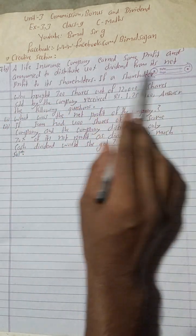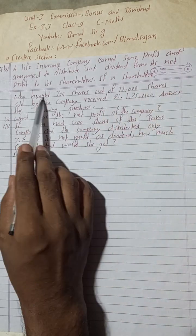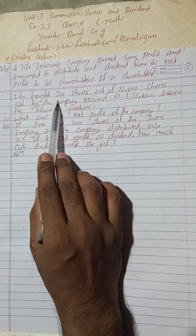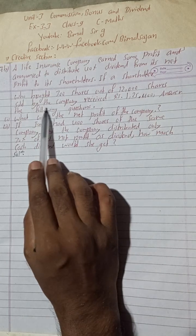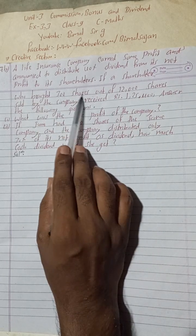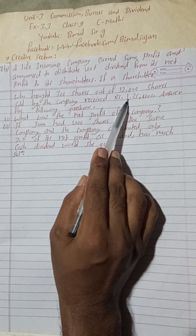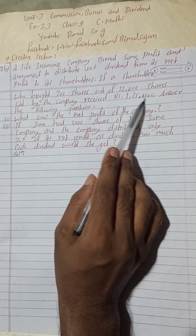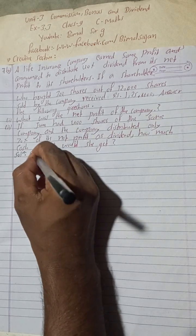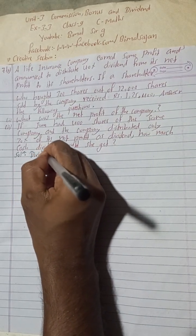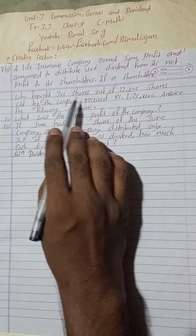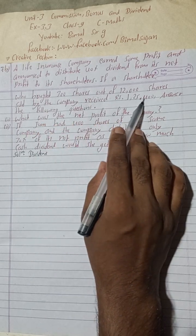Now let's begin the solution. The main point is: a shareholder who bought 300 shares received Rs 1,25,400. So the dividend received for 300 shares is Rs 1,25,400. This is the main point. We start with dividend distributed for 300 shares.